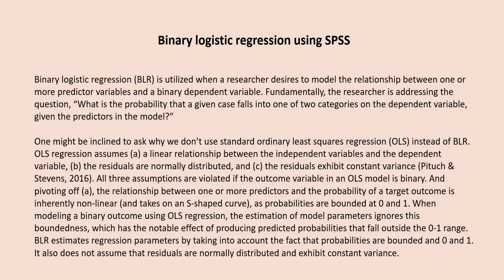One might ask why we don't use standard ordinary least squares regression (OLS) instead of binary logistic regression. OLS regression assumes a linear relationship between the independent and dependent variables, that residuals are normally distributed, and that residuals exhibit constant variance. All three assumptions are violated if the outcome variable is binary. Additionally, probabilities are bounded at 0 and 1, making the relationship inherently nonlinear. OLS ignores this boundedness, producing predicted probabilities outside the 0 to 1 range. Binary logistic regression accounts for this and does not assume normally distributed or constant-variance residuals.